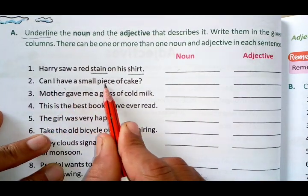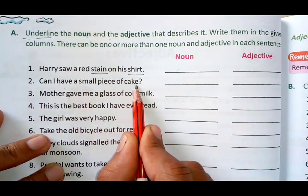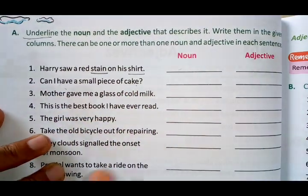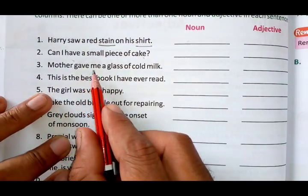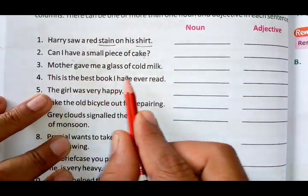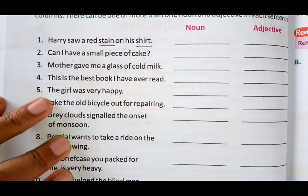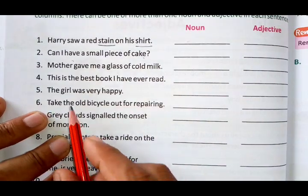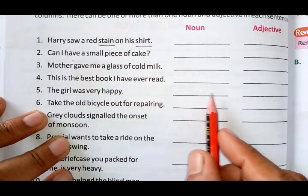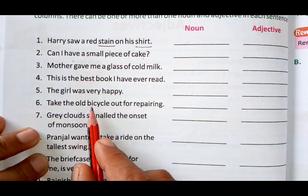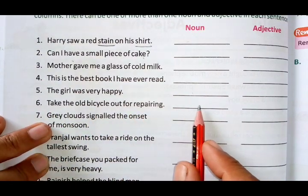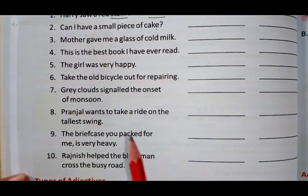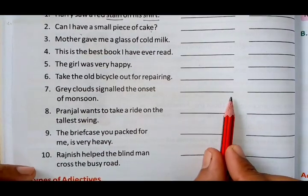Next sentences for the exercise: 'Can I have a small piece of cake?' — find the noun and adjective. 'Mother gave me a glass of cold milk.' 'This is the best book I have ever read.' 'The girl was very happy.' 'Take the old bicycle out for repairing.' Write down the noun and adjective for each — this is your homework. Try to find the answers.